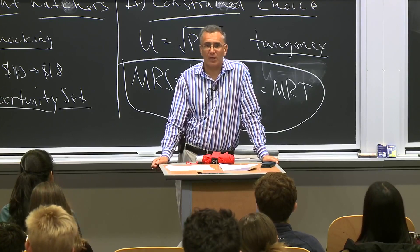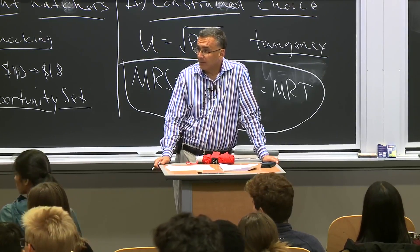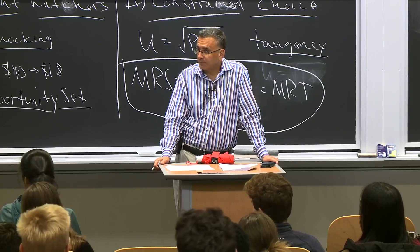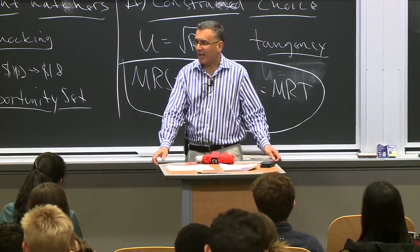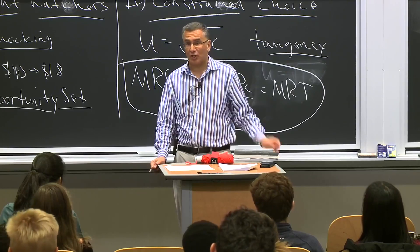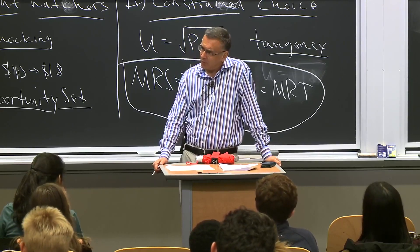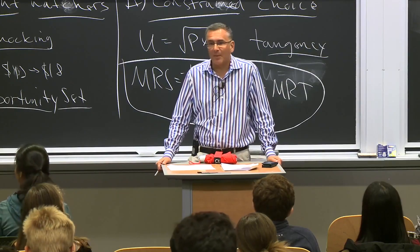Why would we force them to buy food if they'd be better off with cash? Consider changing the label on the y-axis from 'shelter' to 'cocaine.' In that case, maybe we don't feel so bad about forcing the guy to buy food instead. In other words, this program makes sense if we are paternalistic — if we think people won't necessarily make the right decisions for themselves, it may be worth making them worse off on their perceived utility to achieve a better real-world outcome.